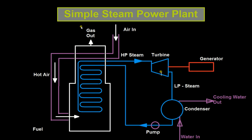Fundamentally, what is a steam power plant? A steam power plant is an industrial setup that generates electricity using the power of steam. You need steam and something to generate electricity, such as a turbine and generator setup, to accomplish this task. So you need high pressure steam, a turbine, and a generator.